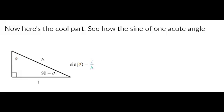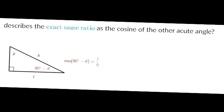Now, here's the cool part. See how sine of one acute angle describes the exact same ratio as the cosine of another acute angle? Well, this means the sine of theta equals the cosine of 90 minus theta.